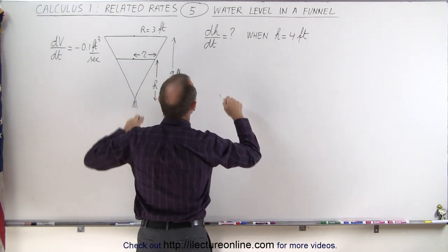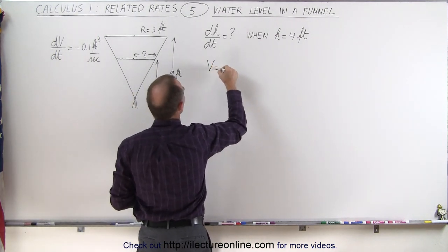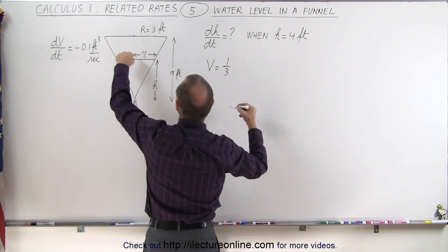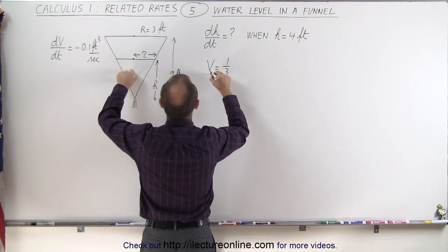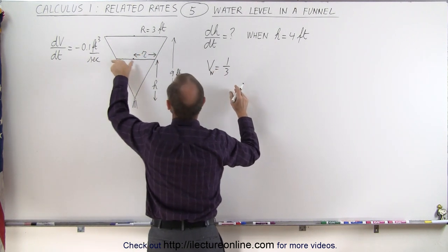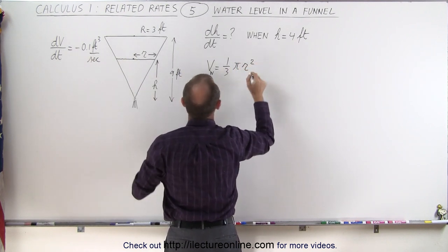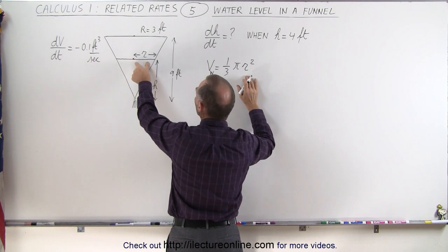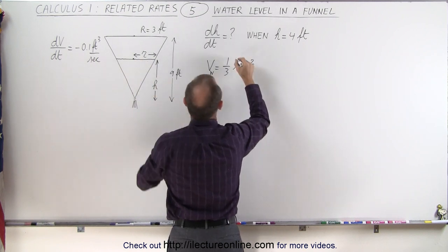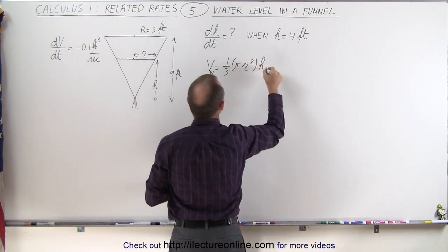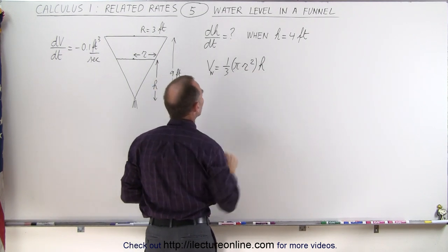We can say that the volume is equal to one-third the area of the base. Now of course we just want to know the volume of the water here, so the area of the base would be pi r squared. We'll use small r because it's the radius where the water level is at and we have to multiply that times the height. So it's one-third pi r squared h.